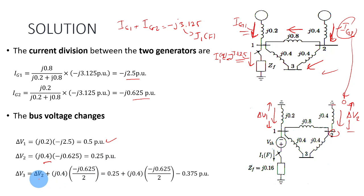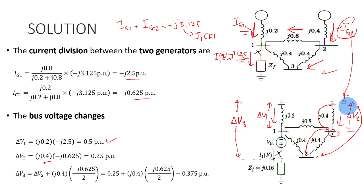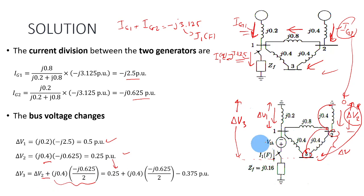To find the change of voltage at bus number 3, you want to find the voltage from this point to bus number 2, plus the drop of voltage from bus number 2 to bus number 3. So the total voltage from this point all the way to bus number 3 — the voltage drop from ground to bus number 3 — is basically the change of voltage at bus number 2 plus the change of voltage between bus 2 and bus 3. The change of voltage at bus number 2 is equal to 0.25.